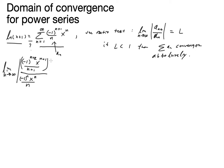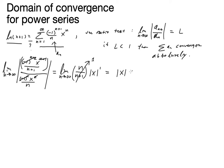We put in the denominator: negative 1 to the n times x to the n, all over n, and take the absolute value of the whole thing. A bunch of stuff simplifies and cancels, and we get n over n plus 1, multiplied by the absolute value of x to the first power. The factor n over n plus 1 goes to 1 as n goes large, so we're left with absolute value of x.